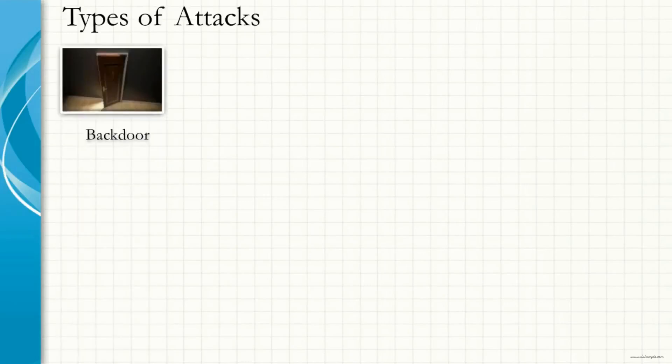The first one is a backdoor. A backdoor is a technique in which a system security mechanism is bypassed undetectably to access computers or its data. One of the most well-known utilities is known as Netcat, and another utility known as Cryptcat.